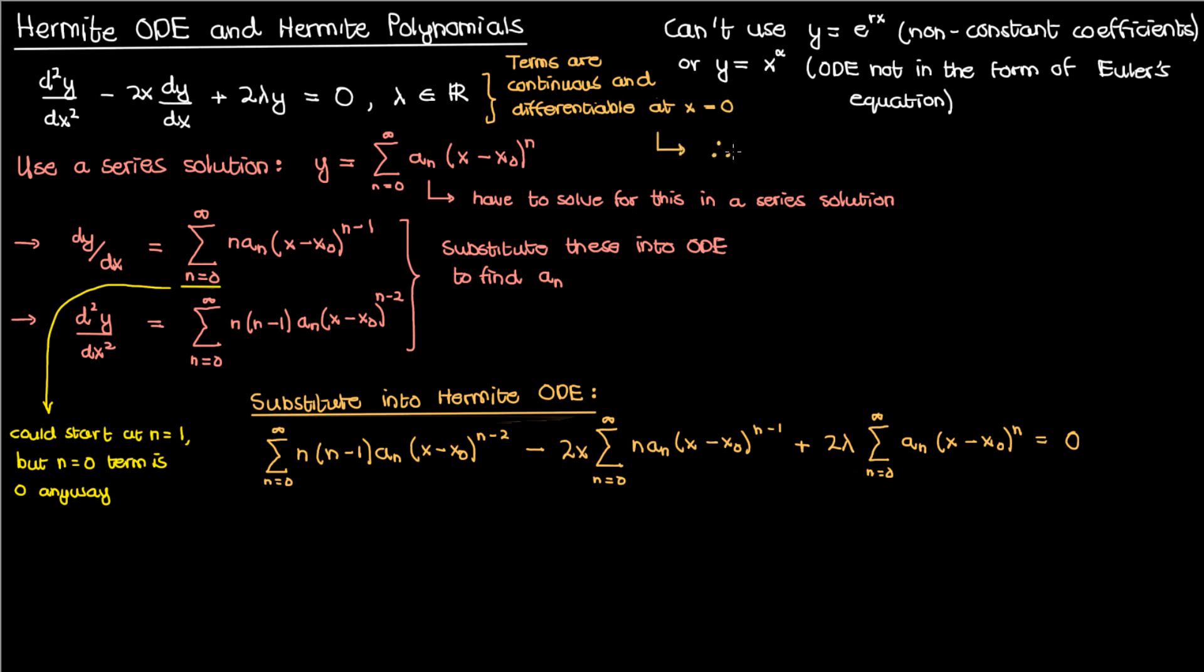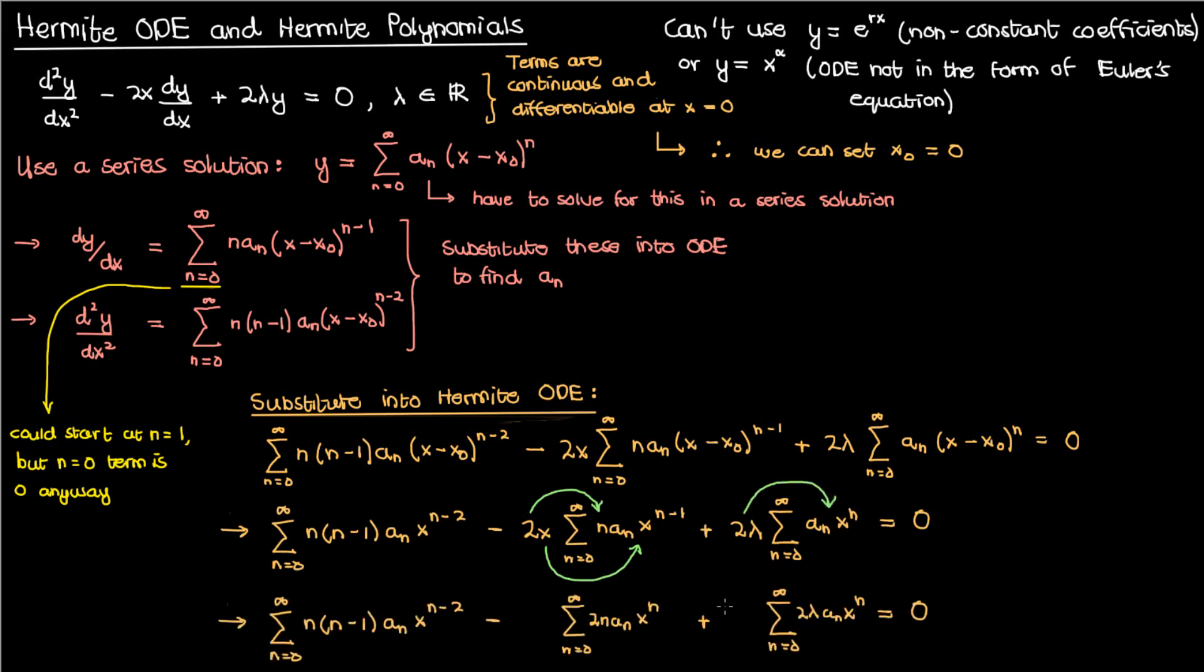As a result, I can center my power series at x_0 equals 0 and not have to worry about a restricted radius of convergence. My power series solution will apply for all finite values of x. And when I set my x_0 to 0, here's what I get. I can now distribute this 2 and distribute this x inside the summation to end up with x to the power n. And I do the same thing with the 2λ to end up with the following expression for the ODE.